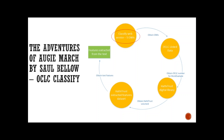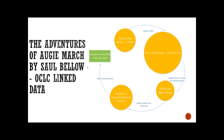Format metadata retrieved may also be taken into account programmatically to remove expressions of works in formats such as audio and video that are not relevant to the project. In this step, five OWIs are identified for The Adventures of Augie March.